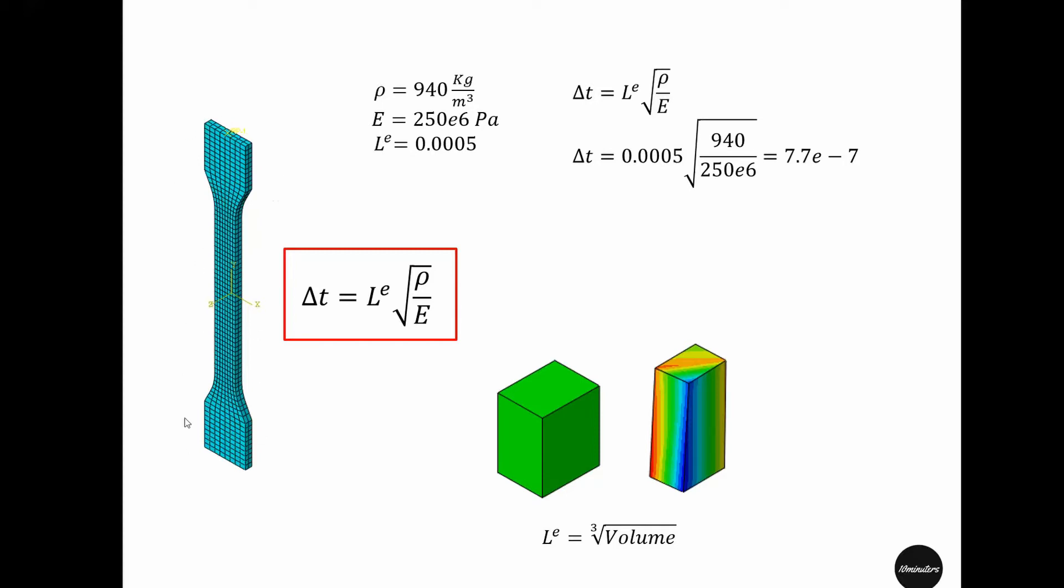But be careful when you artificially increase the density of the material, because that might physically change the result and the result might not be presenting the actual physics. In many cases, increasing the density artificially by some margin will not affect the simulation result significantly.